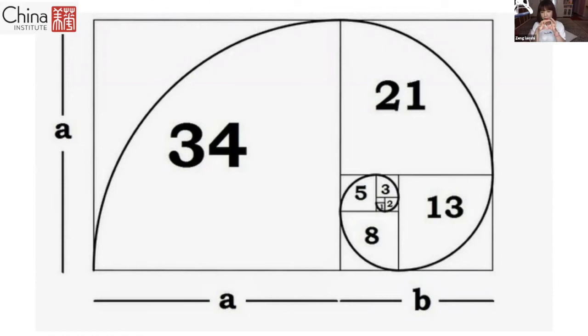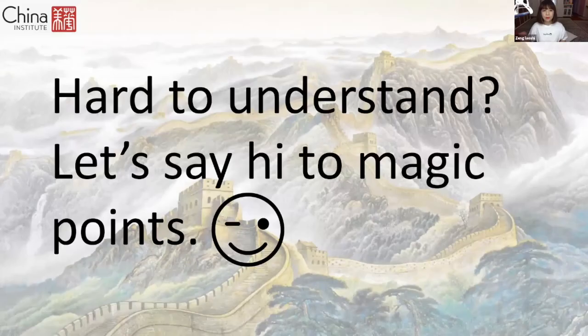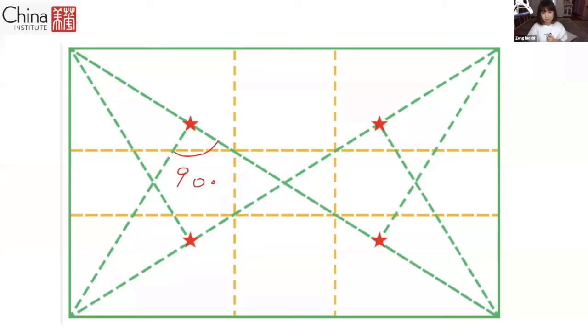That's the golden section ratio point. But this is really hard to memorize and hard to understand. So let's say hi to magic points. Look at the four right stars — remember that?